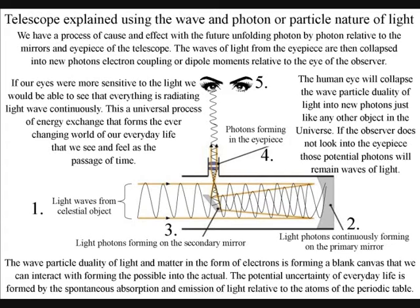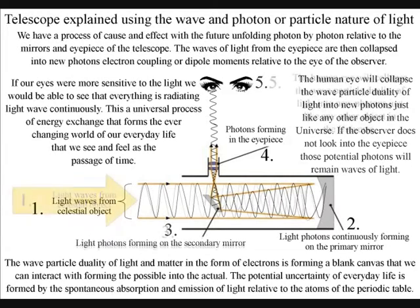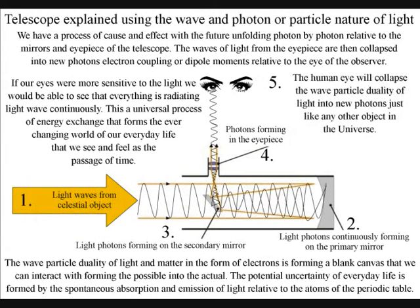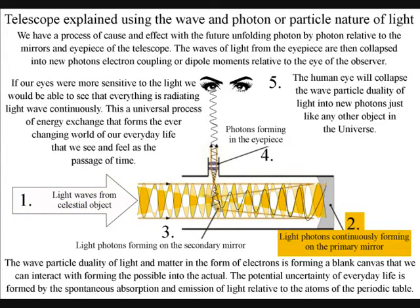Light waves from the object being observed will enter the telescope and will collapse into photons when they come in contact with the primary mirror. This will form new light waves relative to the condition and curvature of the mirror.